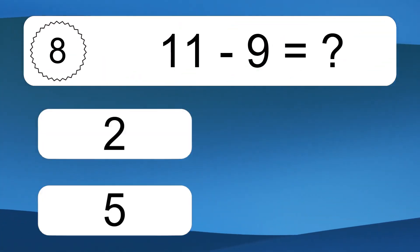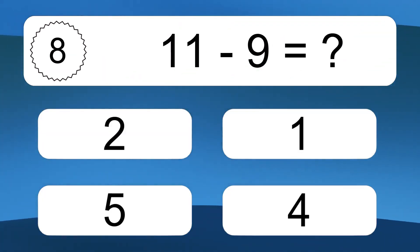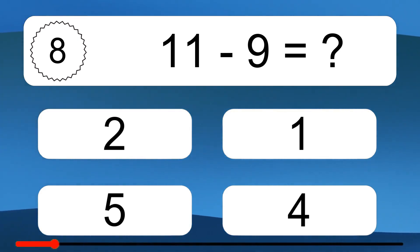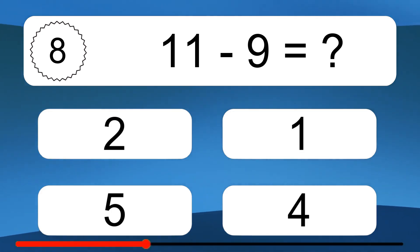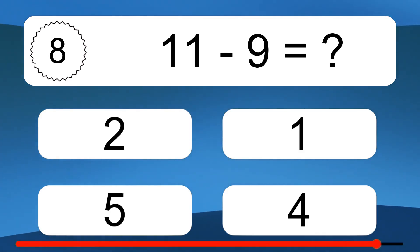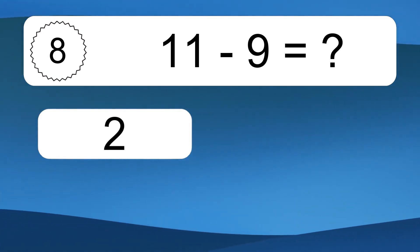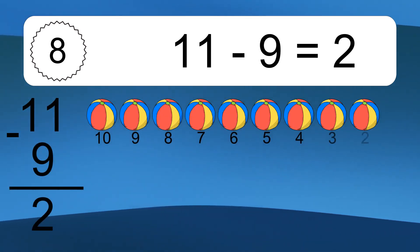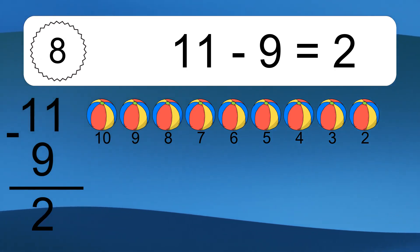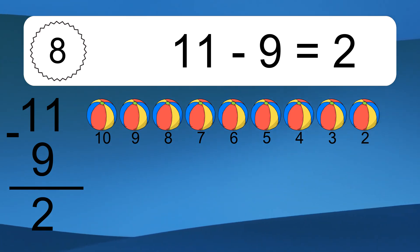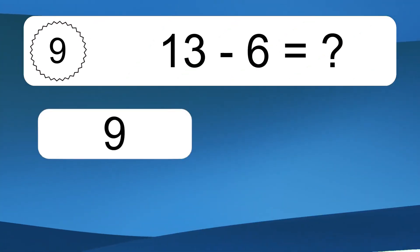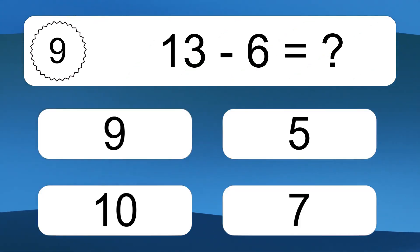11 minus 9 equals what? 11 minus 9 equals 2. Let's count it: 10, 9, 8, 7, 6, 5, 4, 3, 2.